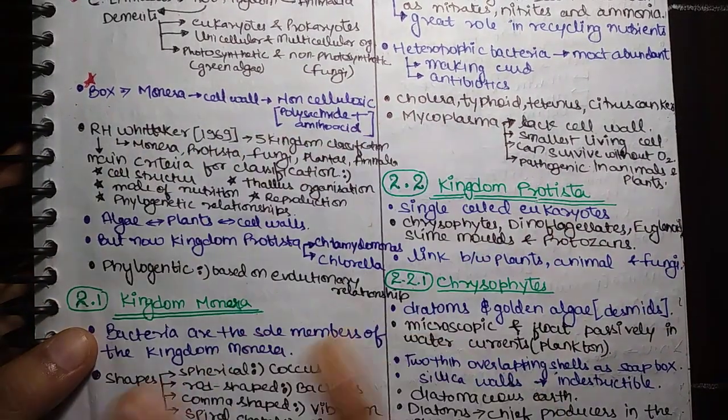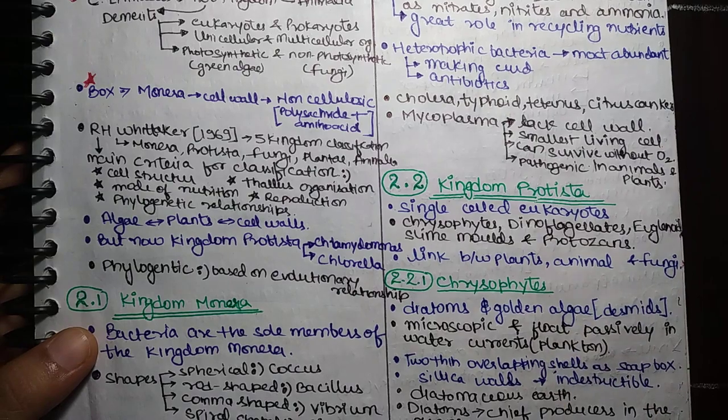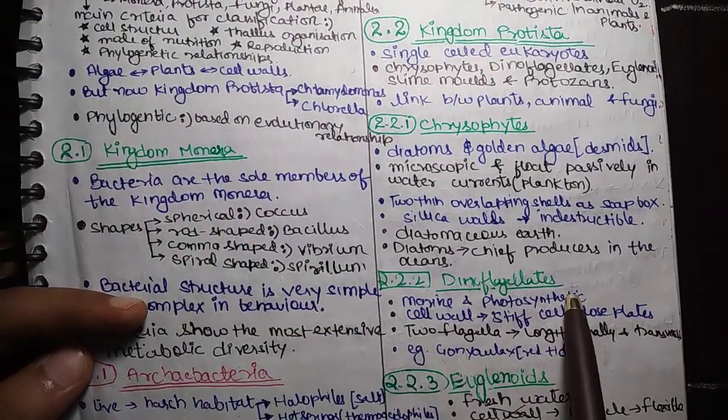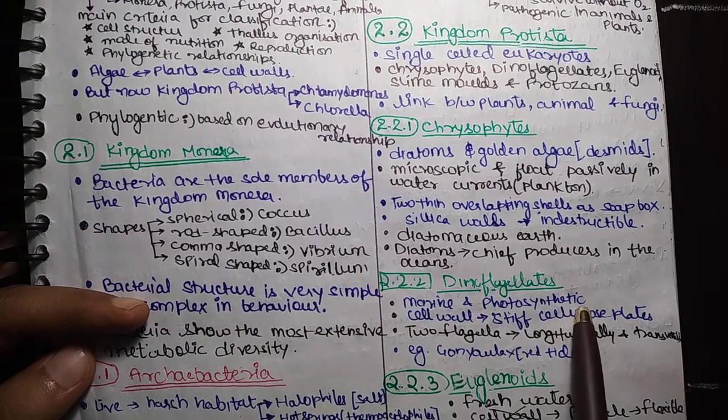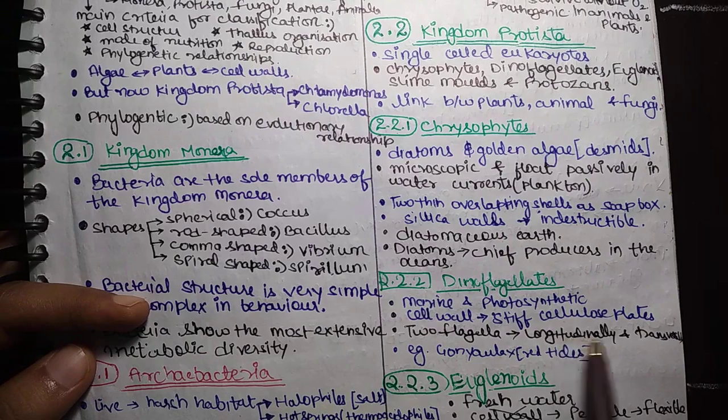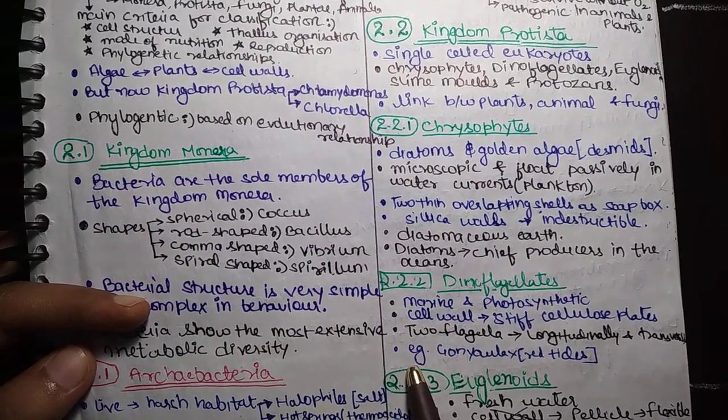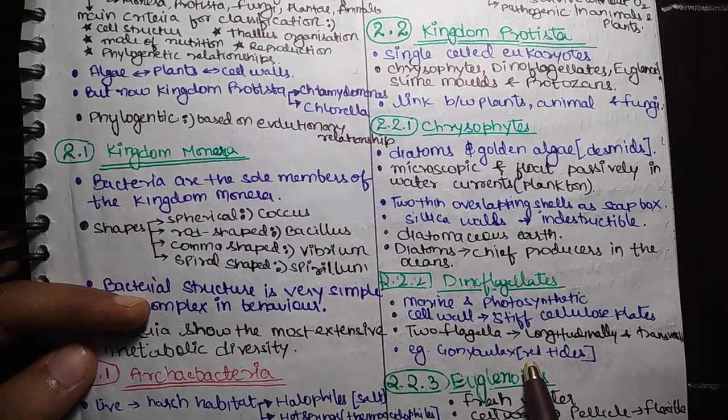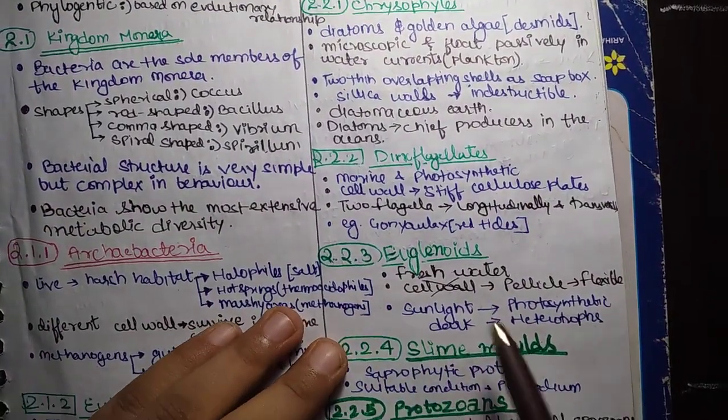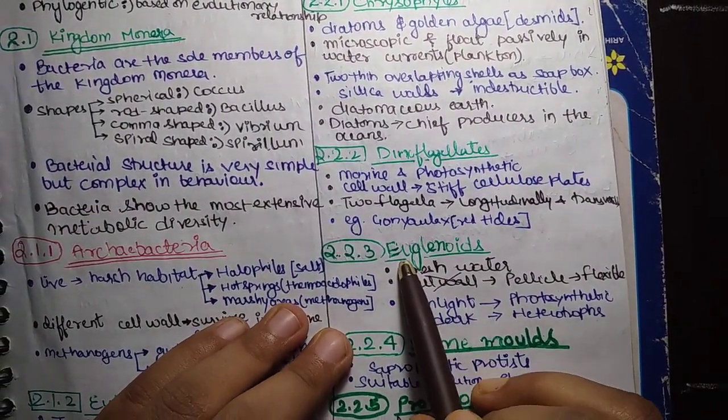These are diatoms. Diatoms are chief producers in the oceans. The next is dinoflagellates, they are marine and photosynthetic cell wall, stiff cell wall plates, two flagella longitudinal and transverse. For example, Gonyaulax red tides cause red tides.